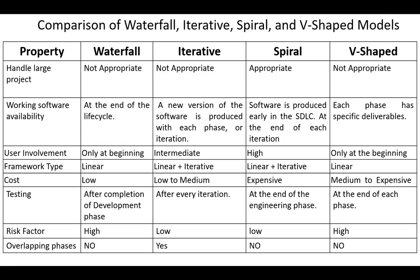Regarding working software availability, in the waterfall model it's available at the end of the life cycle. In the iterative model, a new version of the software is produced with each phase or iteration. In the spiral model, at the end of each iteration as well. And in the V-shaped model, each phase has specific deliverables.